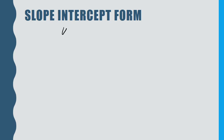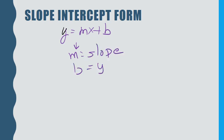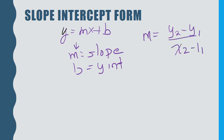Slope-intercept form is y equals mx plus b, where m is the slope and b is the y-intercept. The other formula we're going to use — learned in the last unit — is the slope formula: y2 minus y1 over x2 minus x1. We're also going to use the point-slope equation, putting everything we've learned in the last couple of weeks together.